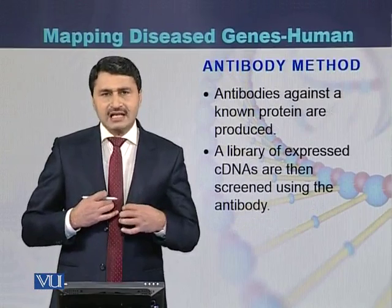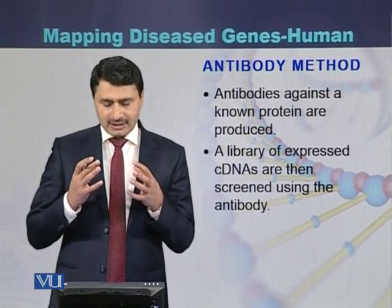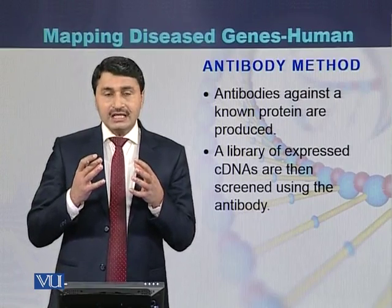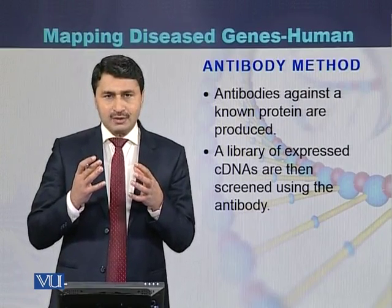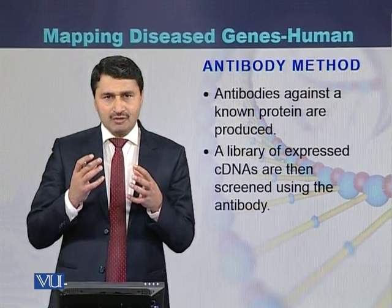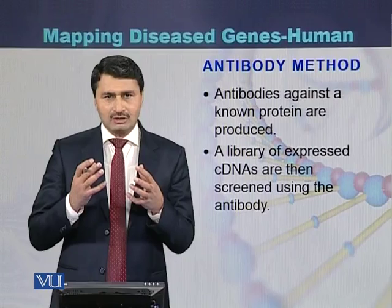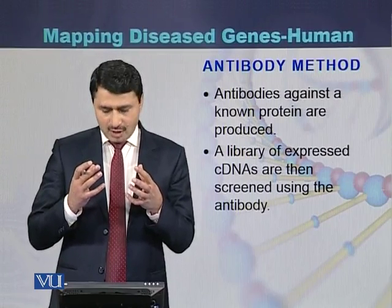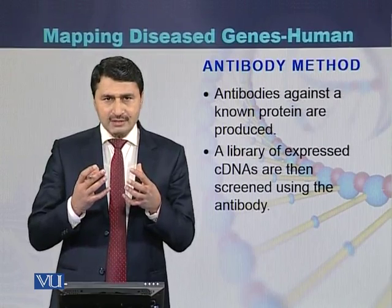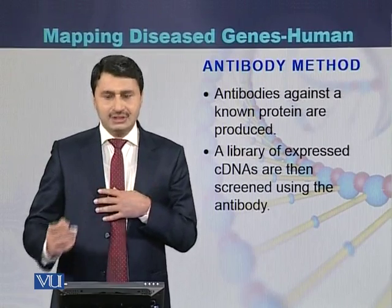A second method under position independent is the antibody method. In this case, antibodies are produced using certain animals such as rabbit or mouse. Once the antibodies are produced, they are used along with oligonucleotides to screen cDNA libraries.